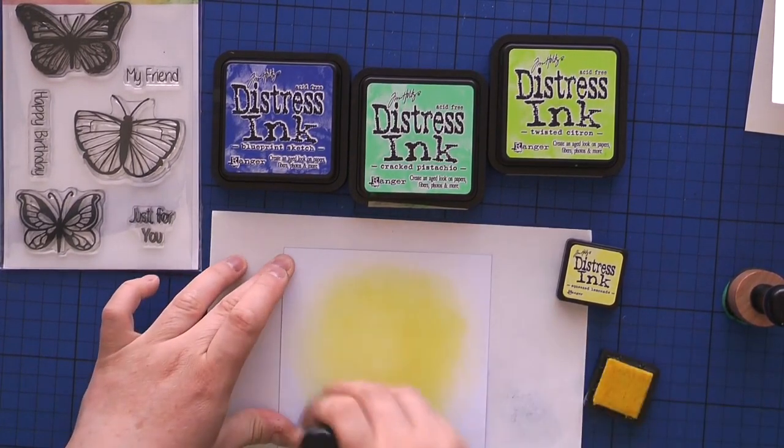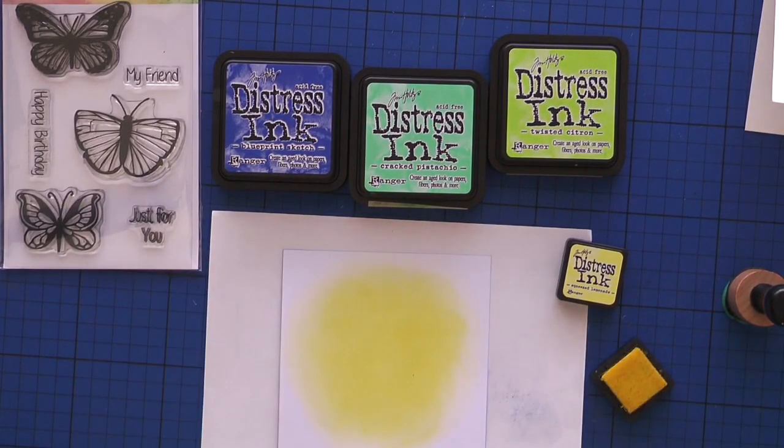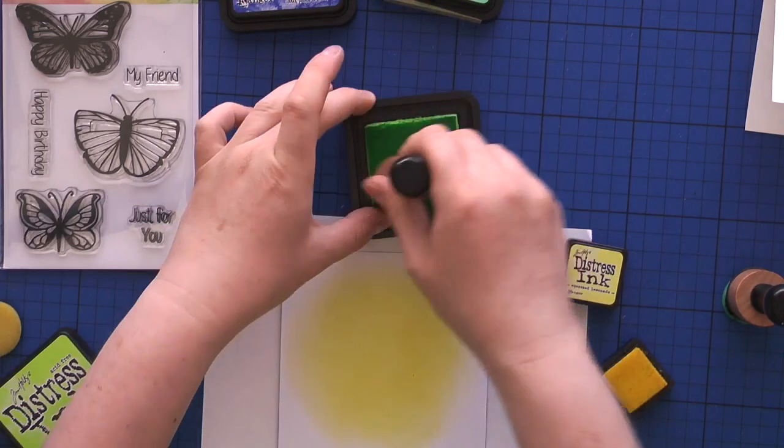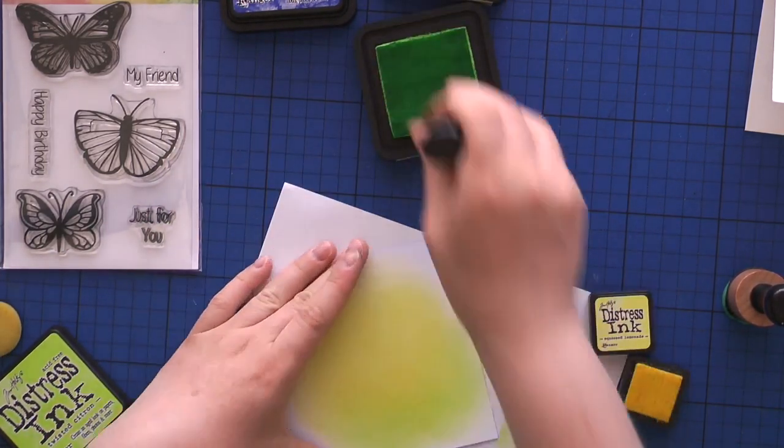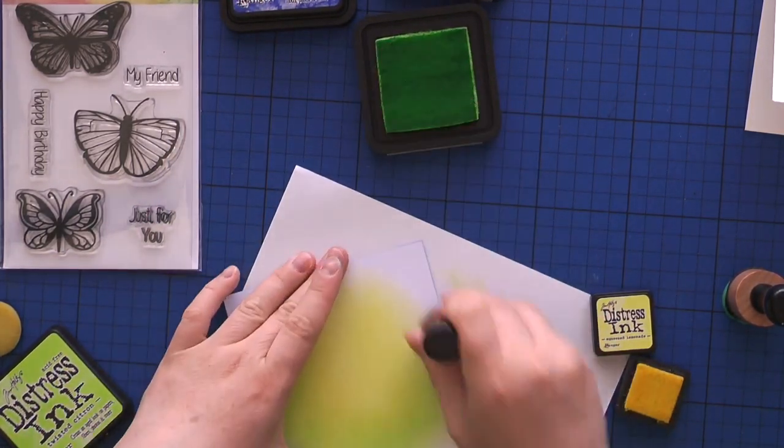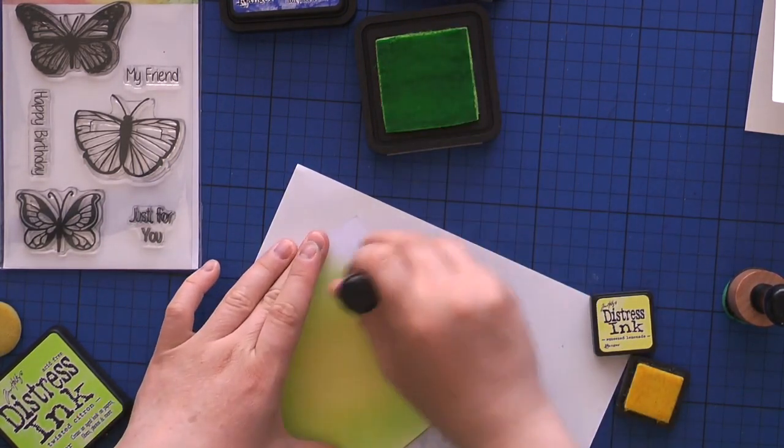I'm going in with squeezed lemonade first, then twisted citron and cracked pistachio. I sped up the video so you can get an idea of how to blend. I basically go in from outside towards the inside, unless of course like with squeezed lemonade I started in the center.